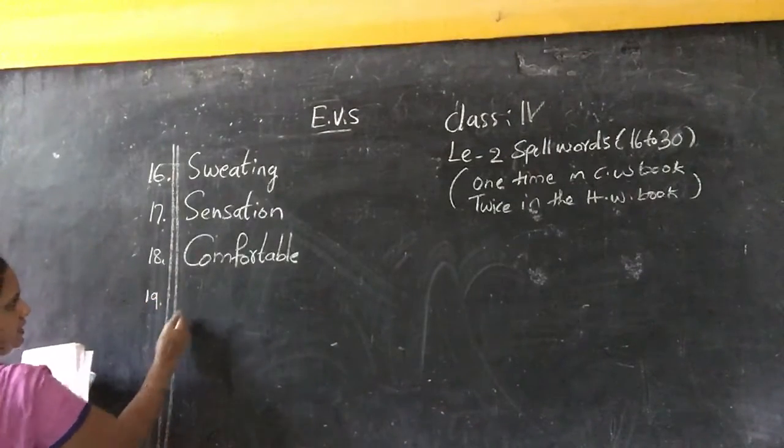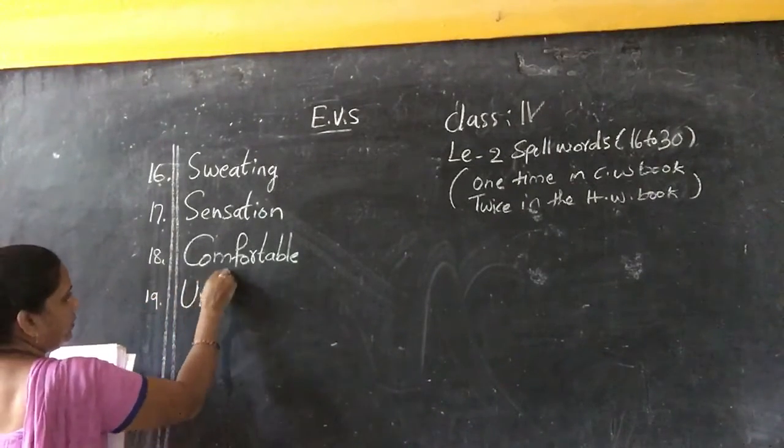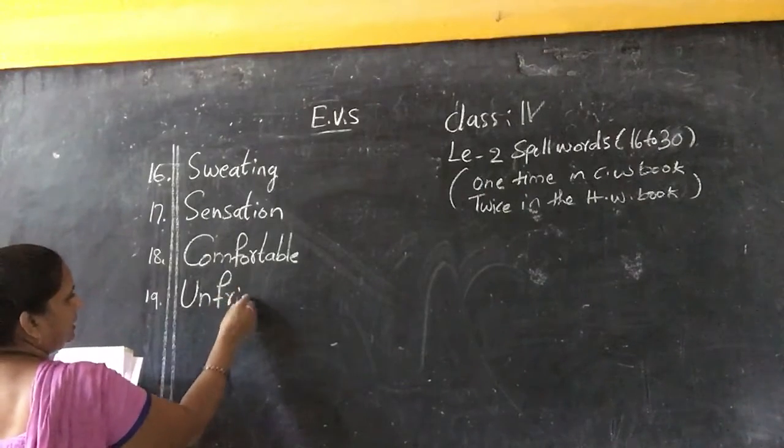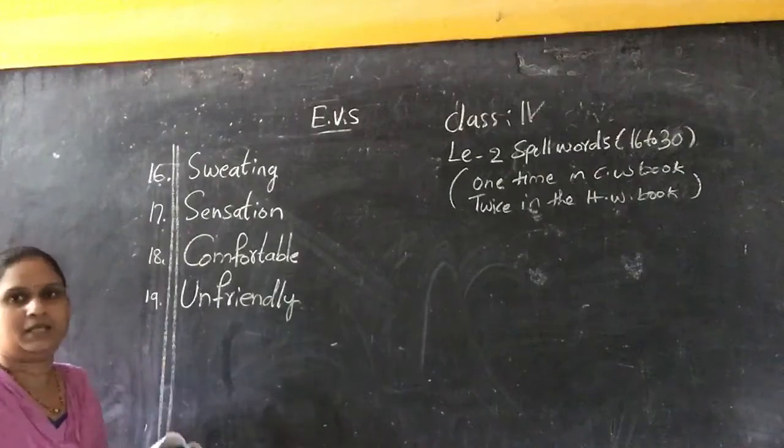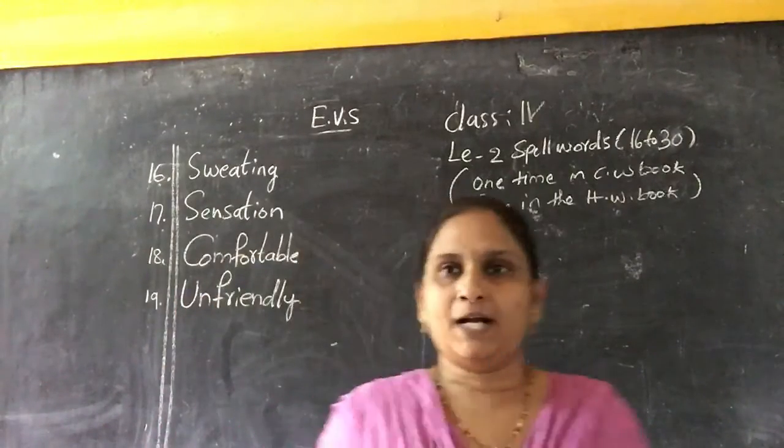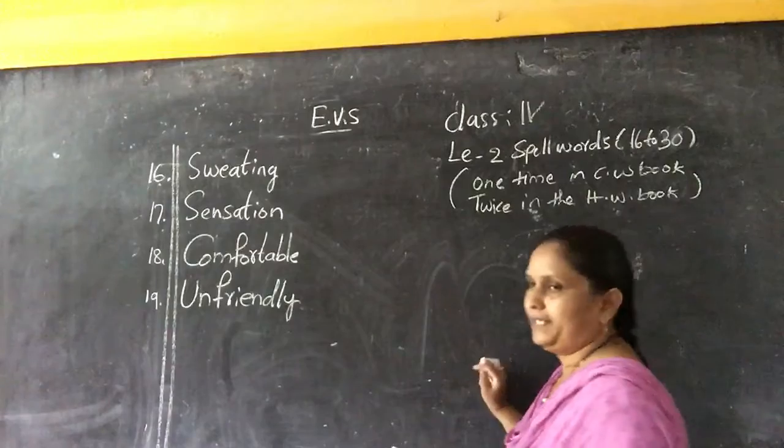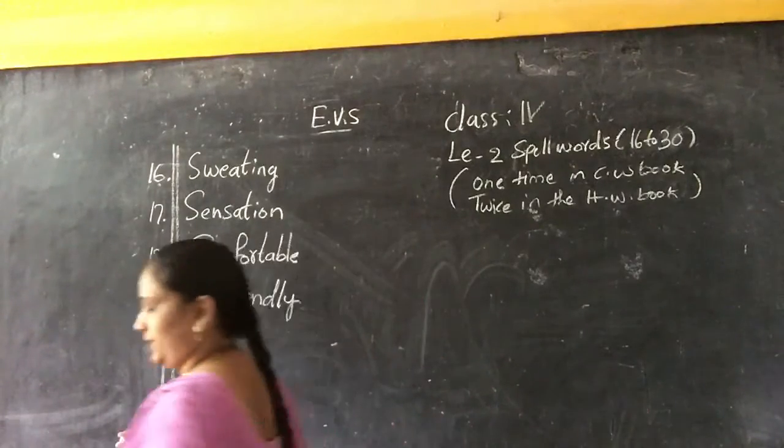Number 19: Unfriendly, U-N-F-R-I-E-N-D-L-Y, unfriendly.